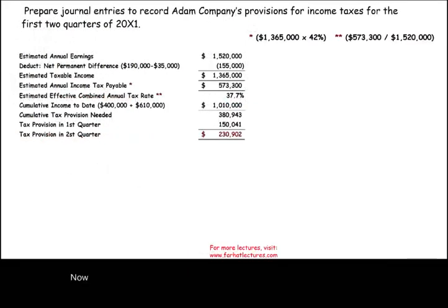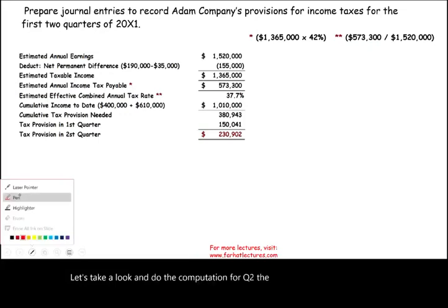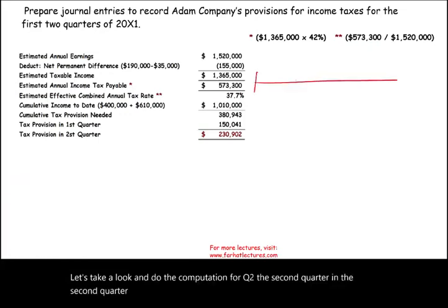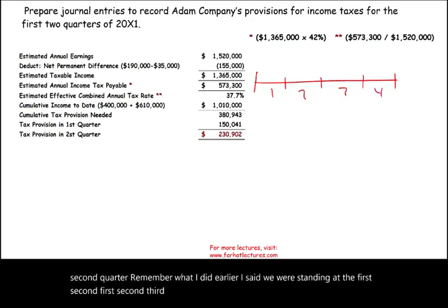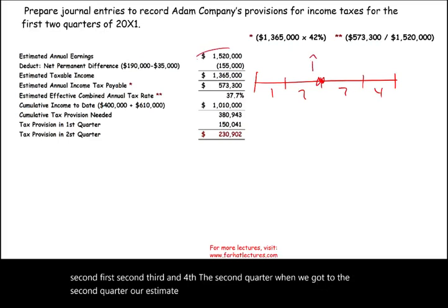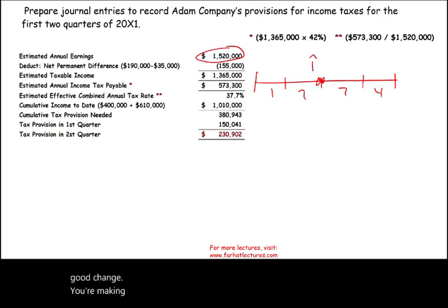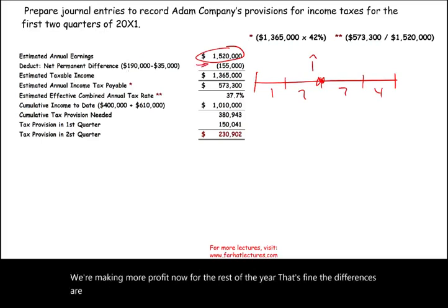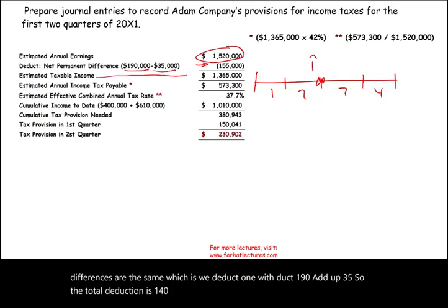Now let's do the computation for Q2, the second quarter. When we get to the second quarter, our estimate of annual earning is one million five hundred and twenty thousand — estimates can change as we're making more profit. The differences are the same: we deduct one hundred and ninety and add back thirty-five, so the net deduction is one hundred and forty-five thousand, to arrive at our new estimated taxable income as of Q2.